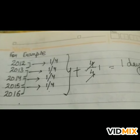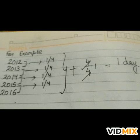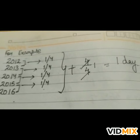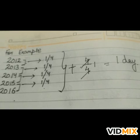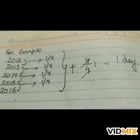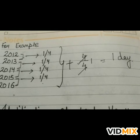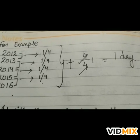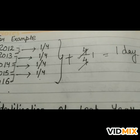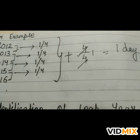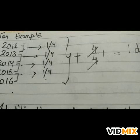Let us take an example using 2012 to 2016. Each year contributes 1/4 day, so over 4 years we get 4/4, which equals 1. This extra 1 day is added to the month of February. So after every 4 years, February has 29 days instead of the usual 28 days, and that year has 366 days. Such a year is known as a leap year.